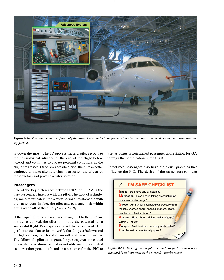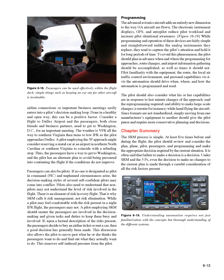Once risks are identified, the pilot is better equipped to make alternate plans that lessen the effects of these factors and provide a safer solution. Passengers — one of the key differences between CRM and SRM is the way passengers interact with the pilot. The pilot of a single-engine aircraft enters into a very personal relationship with the passengers, sitting within arm's reach all of the time. If the capabilities of a passenger sitting next to the pilot are not being utilized, the pilot is limiting the potential for a successful flight. Passengers can read checklists, verify performance of an action, re-verify that the gear is down and the lights are on, look for other aircraft, and even tune radios.